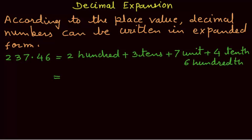So, 200 can be written as 200 plus 3 tens can be written as 30. 7 unit place or 1's place can be written as 7. 4 tenths can be written as 4 over 10, and 6 hundredths can be written as 6 over 100.